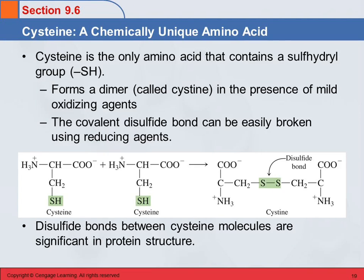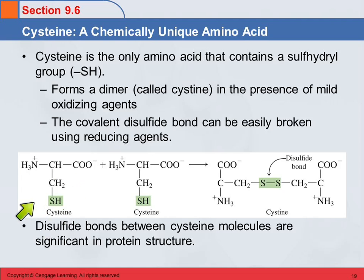Cysteine is kind of a unique amino acid in that it has this sulfhydryl group, an SH group. Here we see the structure of cysteine as a zwitterion.